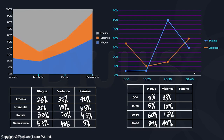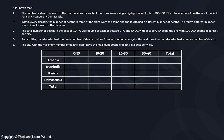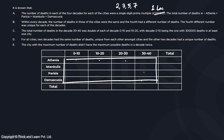Using the additional statements, we need to find city-wise decade-wise deaths. The first condition says all deaths are single-digit prime multiples of 1 lakh: 2, 3, 5, or 7 lakh. Every entry in the city-by-decade table must be one of these four values.